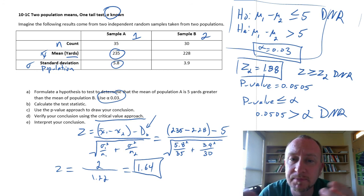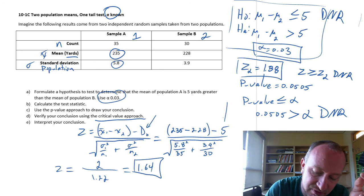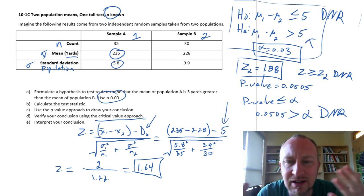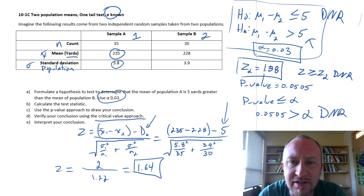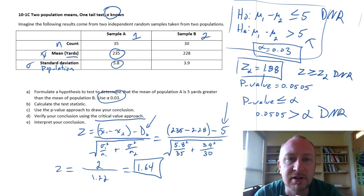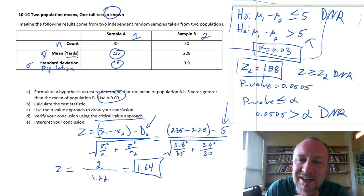So that's all there is to it. Having a different hypothesized value doesn't change things much. It changes just what shows up in the hypotheses. And of course, it comes up in the interpretation of the results. But otherwise, nothing much has changed as far as the process and the calculations and things are concerned. So that's it. I hope that that helps. Thanks again for watching. Bye-bye.